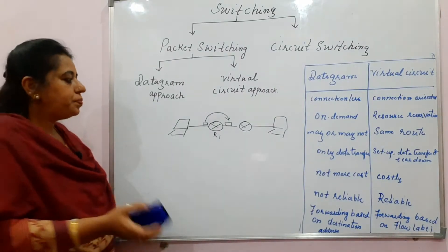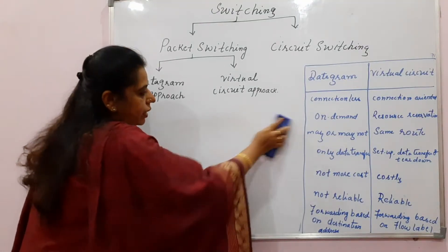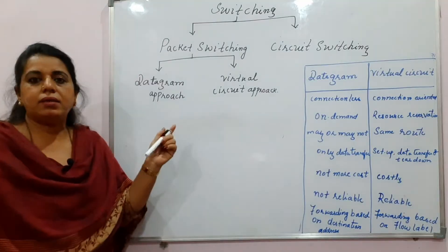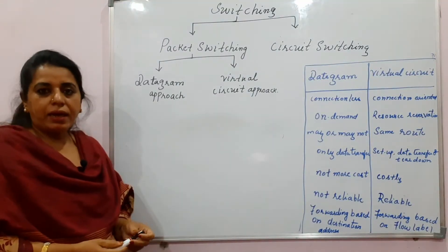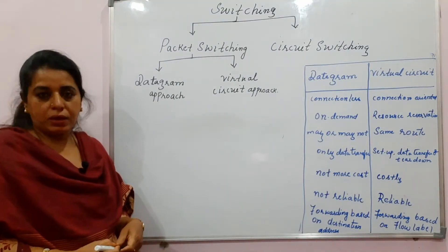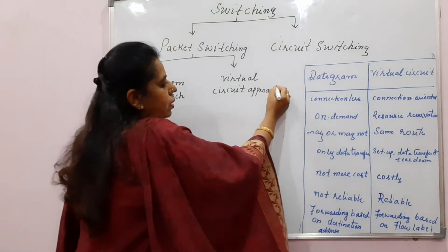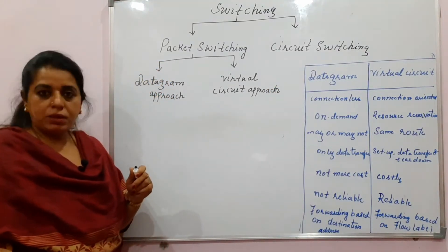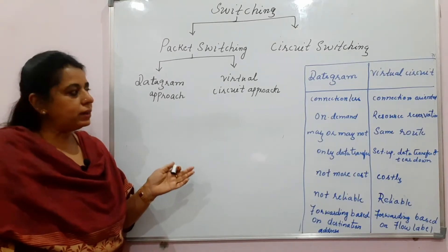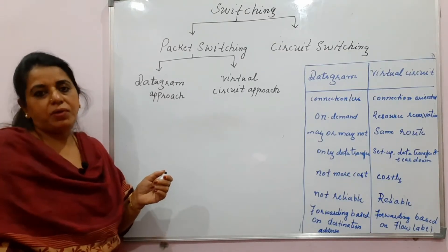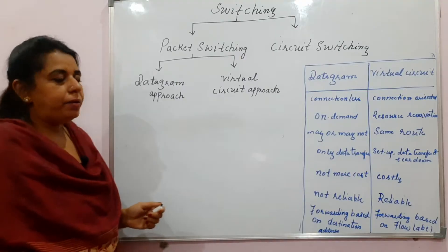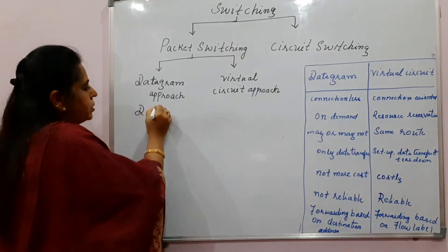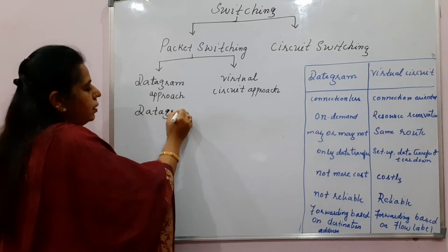Switching is divided into two types: packet switching and circuit switching. Packet switching is implemented in the network layer and is categorized into two approaches: one is the datagram approach and another is the virtual circuit approach. You will learn about both approaches in today's video lecture, and we can also make a comparison between them.